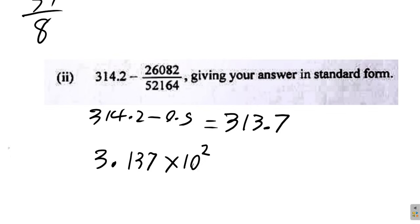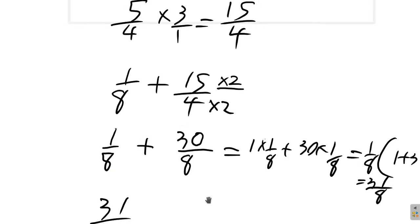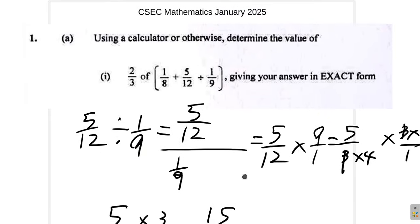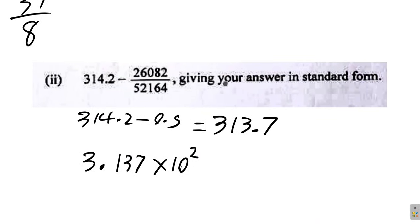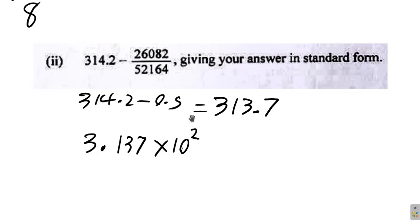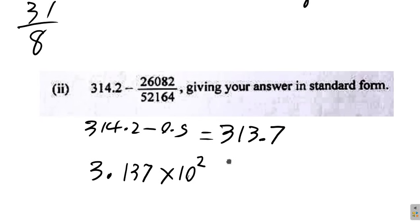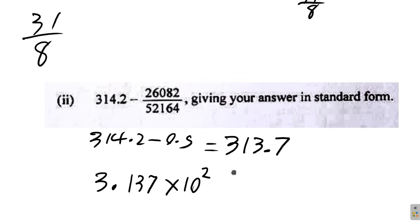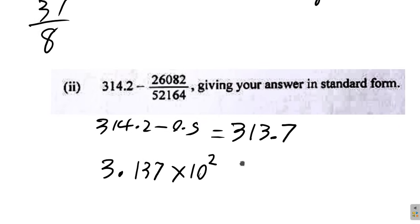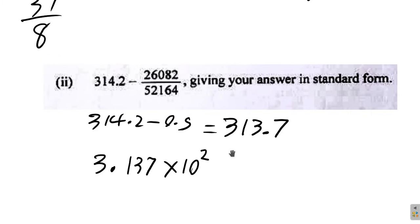So there you go. Answer to question 1A1, the answer is 31 over 8. 1A2, I mean, it's 3.137 times 10 squared. Now if you watch any video and you see me making a mistake, just let me know. Okay. So I'll see you in the next video. We will continue working it out.